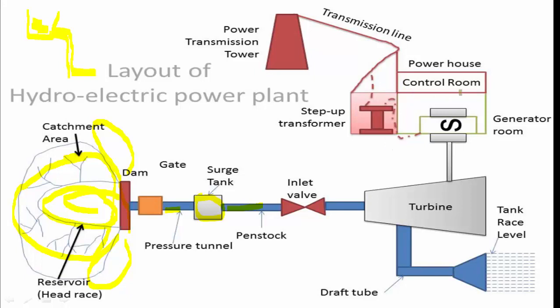That shaft will be attached to a generator. By means of the generator, mechanical energy will be converted into electrical energy, and it will be sent out for distribution. The plant will also have something called a draft tube.